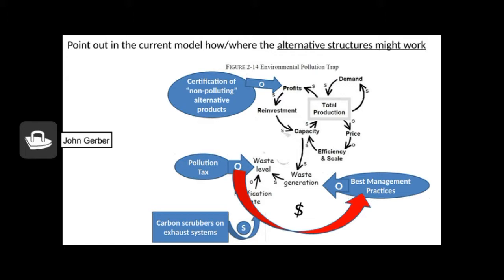Let's use our systems dynamics model to understand these proposed solutions that my students came up with. Starting at the top, we might certify non-polluting alternative products and increase sales of non-polluting products, things like organic food. As organic food production sales increase, profitability of non-organic food products will go down. Increasing the non-polluting product will decrease the profitability for the polluting product. And as profits decrease, reinvestment goes down and capacity of the polluting products will go down.